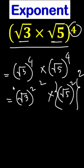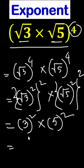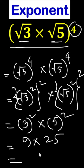Now look — root 3 squared means only 3, then squared; times root 5 squared means only 5, then squared. So here, 3 squared means 9, and 5 squared means 25. Multiplying both together, the answer is 225.